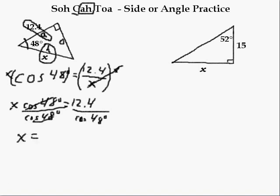Now take it to your calculator. 12.4 divided by cos 48 is how these calculators work. Your calculator might work a little bit different. Hit equals, and I get 18.5. Done. Next one.